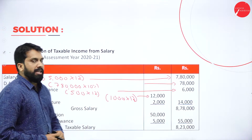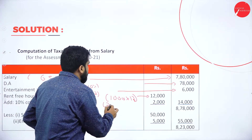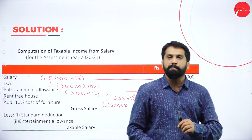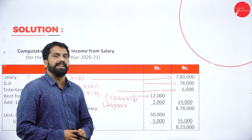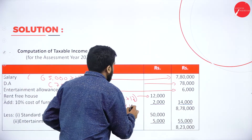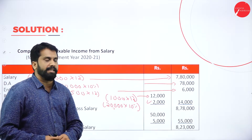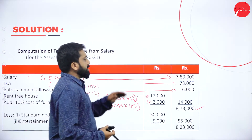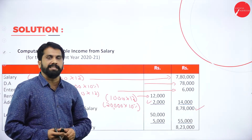Along with that, he was provided furniture worth 20,000. As I told you, any assets provided to employee by employer — 10% of the cost of the asset. 10% of 20,000 equals 2,000. So 12,000 plus 2,000 equals 14,000 for rent-free furnished house. Total everything: 7,80,000 plus 78,000 plus 6,000 plus 14,000 equals 8,78,000.